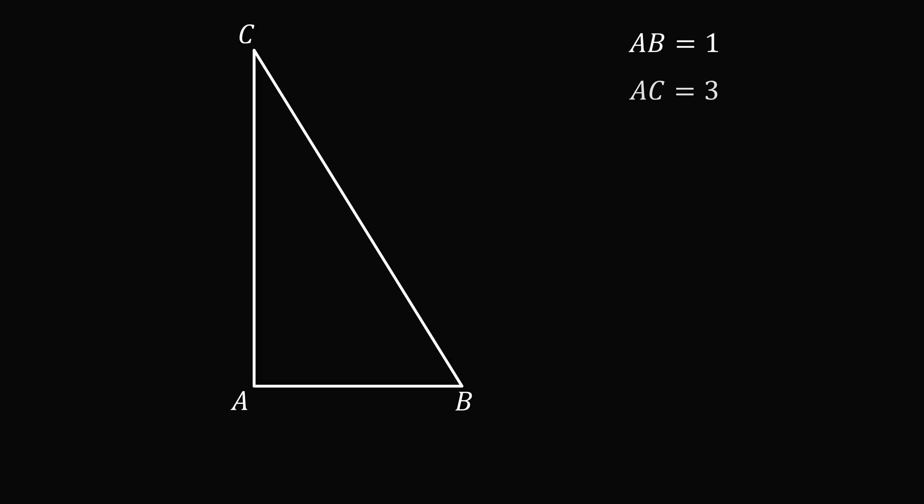We have the triangle ABC. AB is equal to 1, and AC is equal to 3. Angle BAC is equal to pi over 2, which is equal to 90 degrees, so angle A is a right angle.